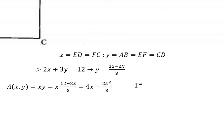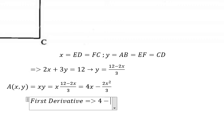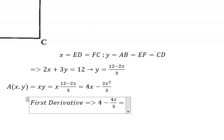The next step is to find the first derivative. We have 4 minus 4x/3, and we put this function equal to zero.